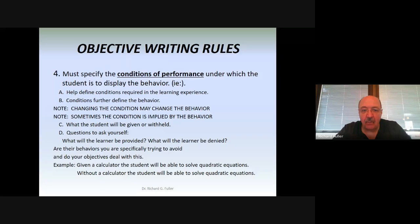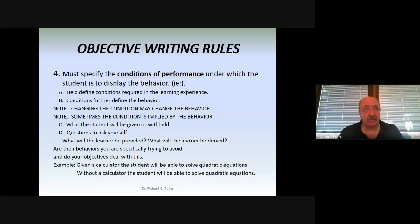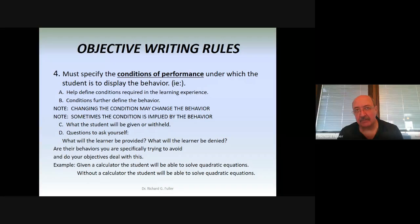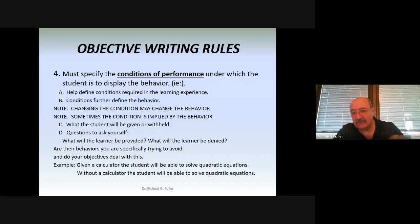Ask yourself: what will the student be given, or what will be withheld from them? For example, if you want students to develop a computer program in Java or COBOL, they have to have access to software, a computer, a mainframe — whatever is required. Build that into the objective. If you understand and build that in, it also helps you when developing instructional strategies — you know what you have to provide and set up. You also want to ask whether there are behaviors you're trying to avoid, and address those in your objectives.